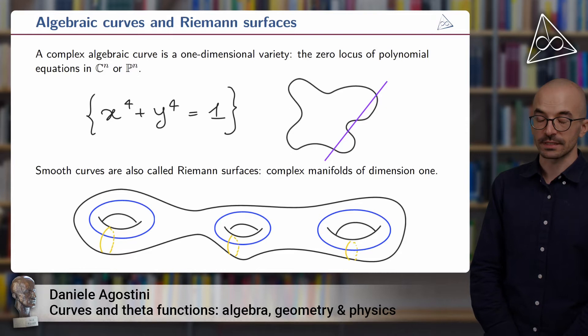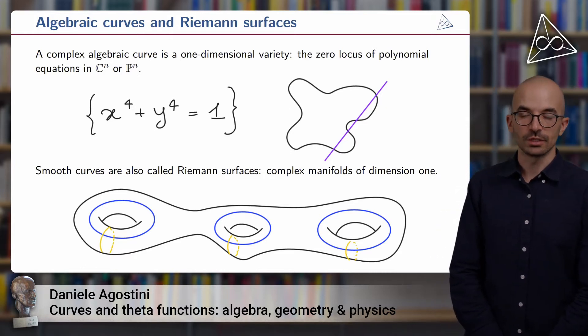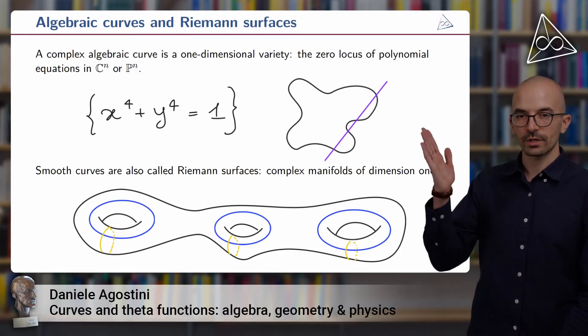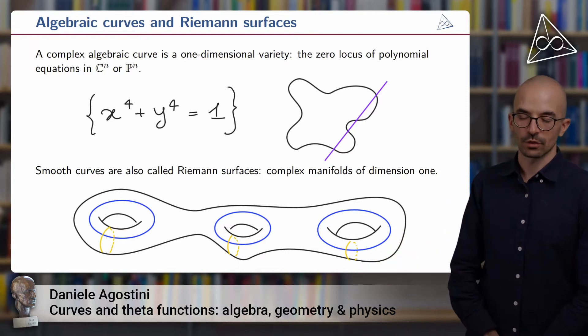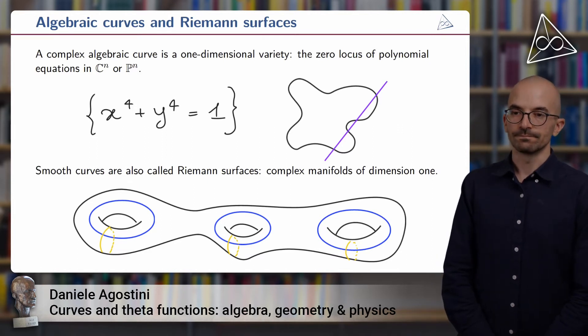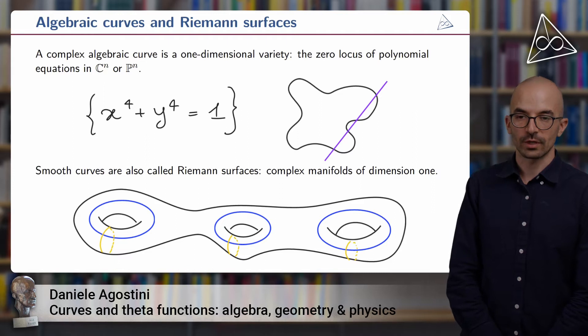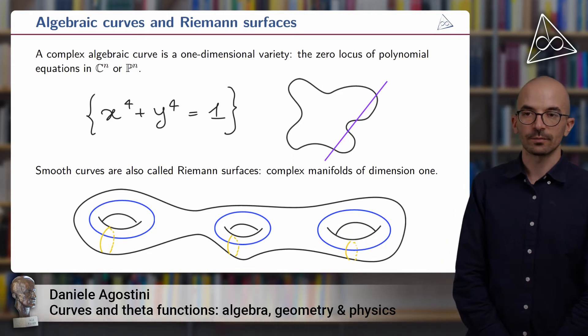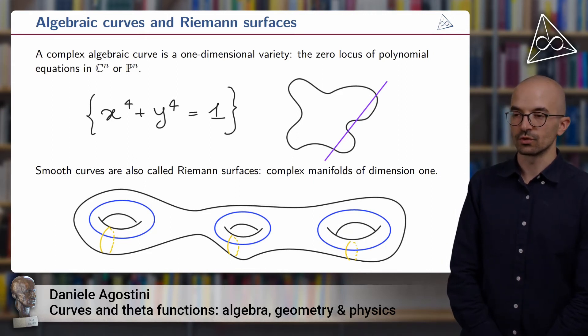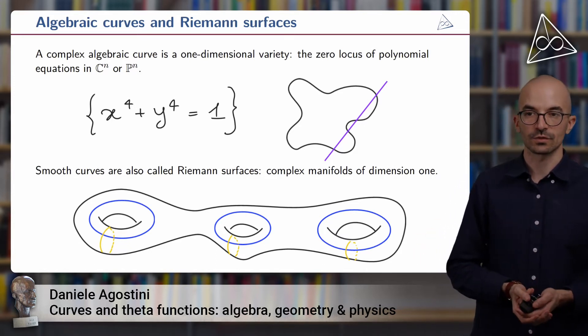When curves are smooth, such as our example here, then they are also called Riemann surfaces. This means that they are compact complex manifolds of dimension 1. Any such complex manifold is topologically a torus with G holes. G is called the genus of the Riemann surface, and it's most important invariant. For example, in the case of our quartic here, the complex Riemann surface has genus 3. And you can see a cartoon of it down here. On the other side, any compact complex manifold dimension 1, so any Riemann surface, is also an algebraic curve. This is a place where we have a very fruitful marriage between algebraic and complex geometry, meaning that we can use both algebraic and complex transcendental methods to study these objects.